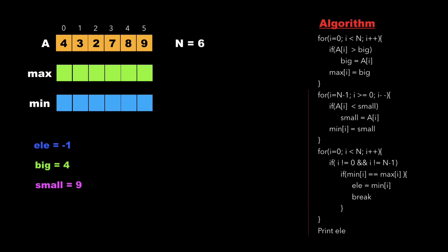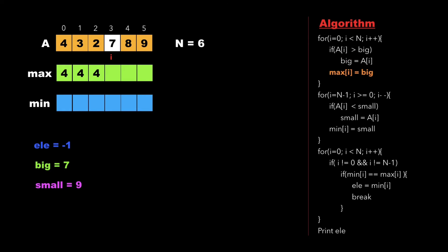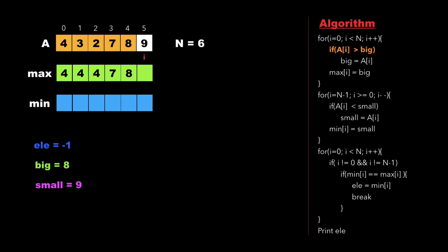The algorithm has 3 for loops. The first loop runs from i=0 to n, traversing start to end of the array. At each step, we check if a[i] is greater than big. Since 4 is not greater than 4, we insert big into max[i]. Similarly for 3, and for 2. When we reach 7, which is greater than 4, we update big to 7 and insert it into max[3]. Then 8 updates big to 8 and goes into max[4], and finally big becomes 9 inserted into max[5].